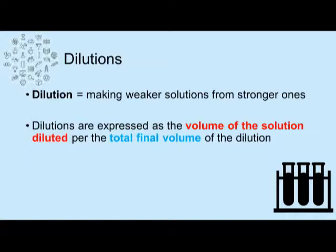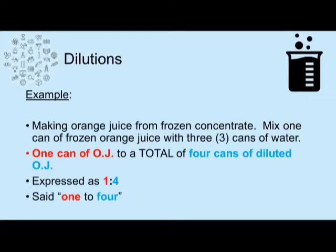The dilution is expressed as the volume of the solution diluted per the total final volume of the dilution. For example, making orange juice from frozen concentrate: you mix one can of frozen orange juice with three cans of water. We have one can of OJ to make a total of four cans of diluted orange juice. One can of concentrate plus three cans of water equals four total, so the dilution is written one to four.